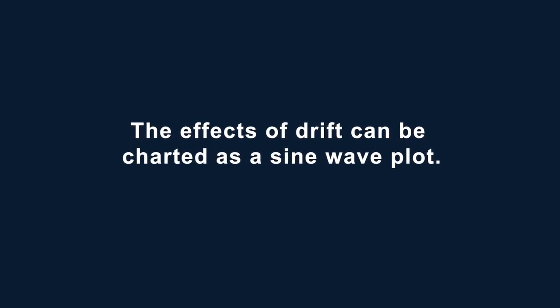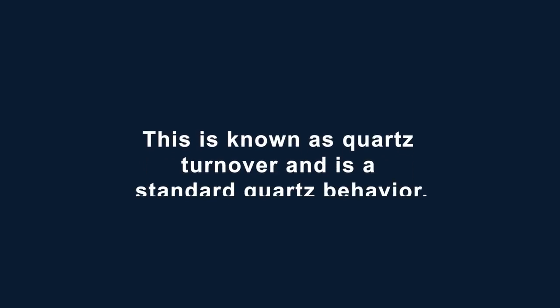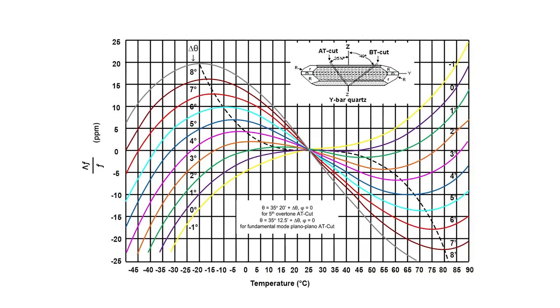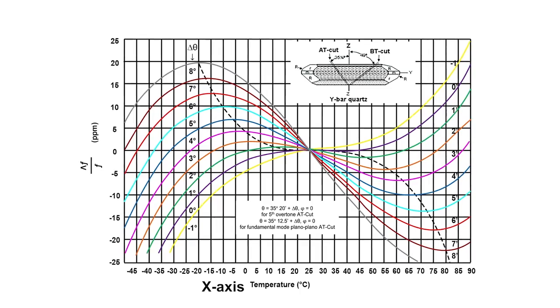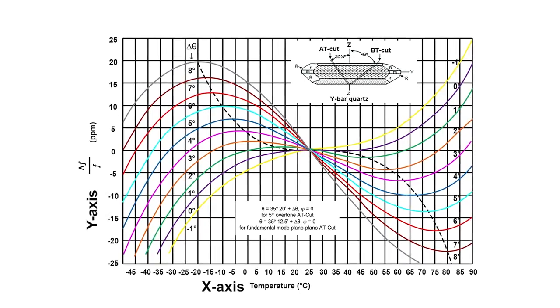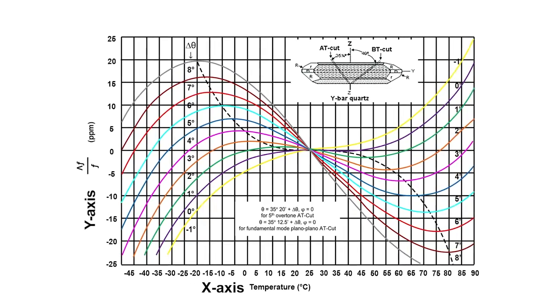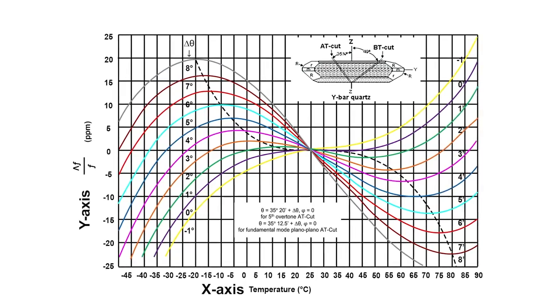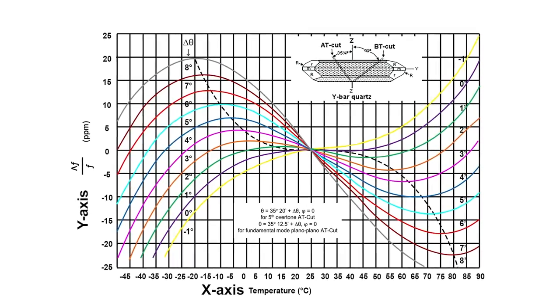The effects of drift can be charted as a sine wave plot. With some increase in temperature, the rate or frequency will increase, but after a certain point the rate will then decrease. This is known as quartz turnover and is a standard quartz behavior. In this figure, the x-axis is temperature and the y-axis is the frequency change in parts per million. The colored curves show different achievable stabilities over temperature based on the angle cut of the quartz.